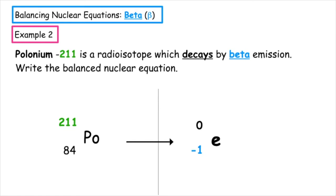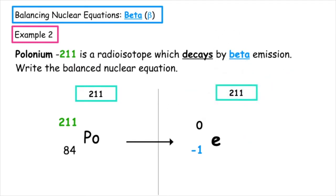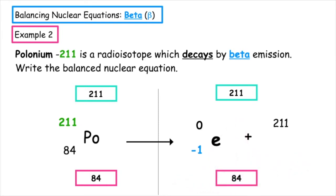The total mass number on the left is 211, which means the total mass number on the right also has to equal 211. Zero plus what gives 211, so the particle produced has a mass number of 211. On the left-hand side, the bottom number totals 84, so on the right-hand side we also have to have a total of 84. Minus one plus what equals 84, so the particle produced has an atomic number of 85. Looking up element 85, we find astatine, chemical symbol At.